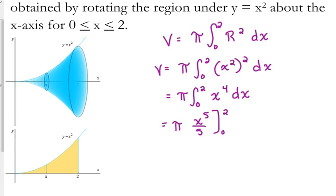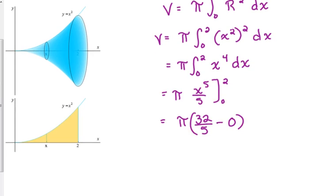The antiderivative of x to the 4th would be x to the 5th over 5, evaluated from 0 to 2. So 2 to the 5th is 32 over 5. Plug in 0, you get 0. So the volume of this solid of revolution would be 32 pi over 5 units cubed.